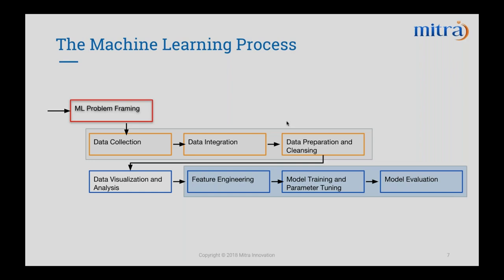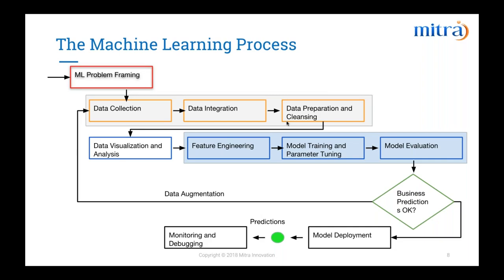If our machine learning model is less than 50% accurate, there's no point using it for intelligent business predictions. There might be several reasons for low accuracy: we might have missed an important data point during collection, the algorithm used is not suited for the scenario, or simply the data is not sufficient for the model to learn from. When this happens, we have to go back to square one, rethink our data strategy, collect more and better data, and potentially do data augmentation. As you can see, this is a cyclic process — by iterating in this manner, we will arrive at an accurate model.